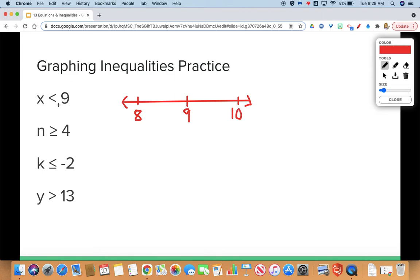Remember we use an open dot if there is not an or equal to. So if it's just a less than or greater than, which is what we have here, we have a less than. So I'm going to draw an open dot over the 9. And then we need to shade. Our inequality says x is less than 9. So which way should I shade for values that are less than 9?